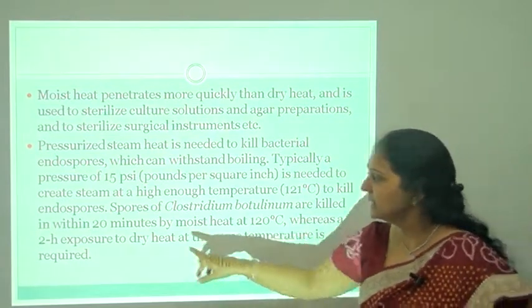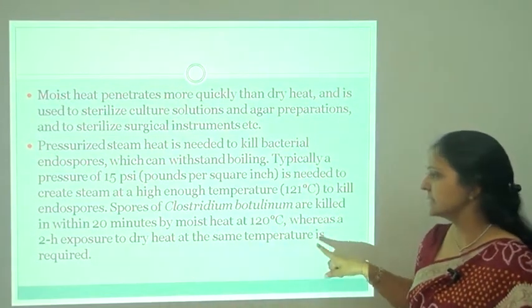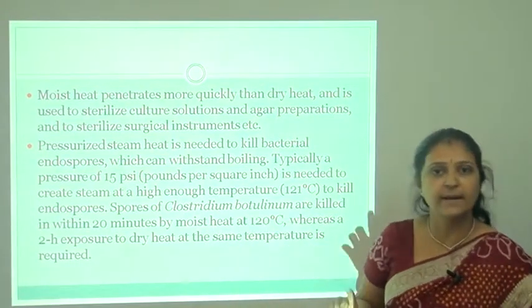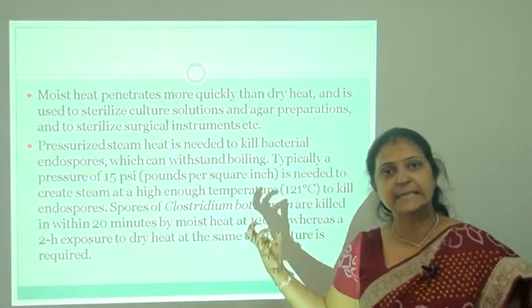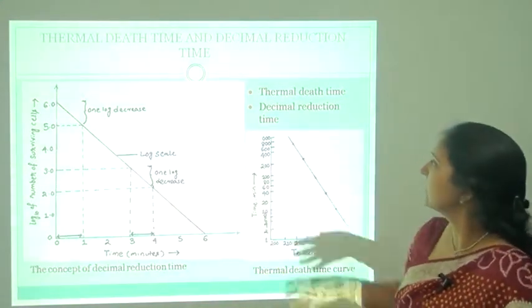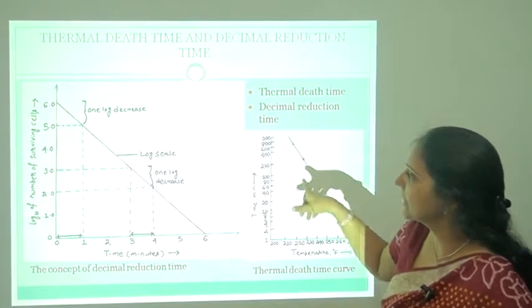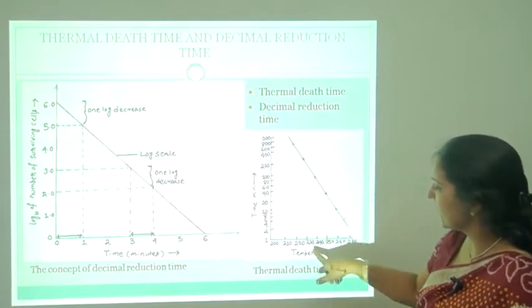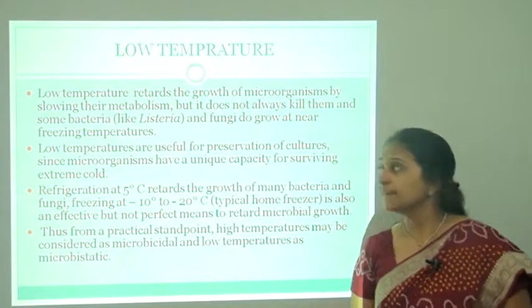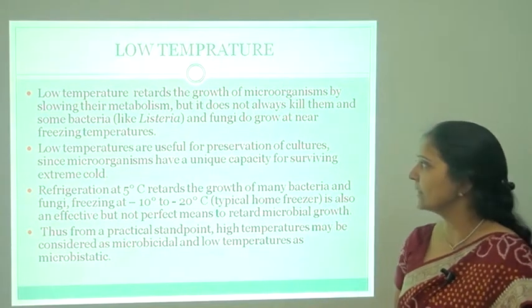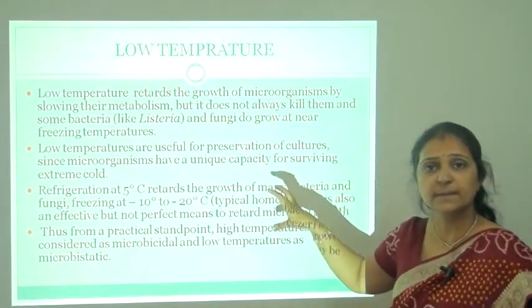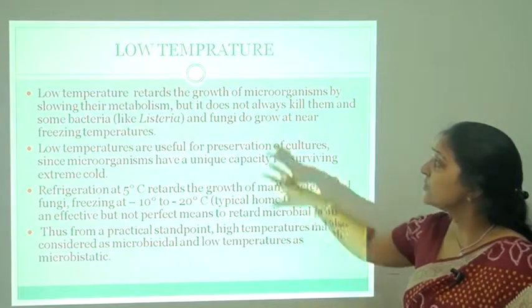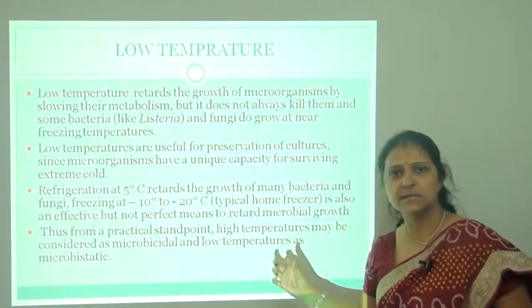Spores of Clostridium botulinum are killed within 20 minutes by moist heat at 120°C, whereas two hours of dry heat at the same temperature is required. So moist heat is more effective than dry heat. Low temperature retards the growth of microorganisms by slowing their metabolism, but does not always kill all microorganisms — it acts as bacteriostatic, not bactericidal. Low temperature is generally used for preservation of cultures, not as a sterilizing method.